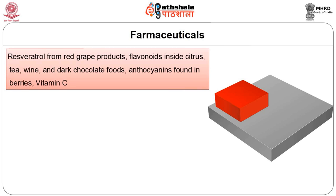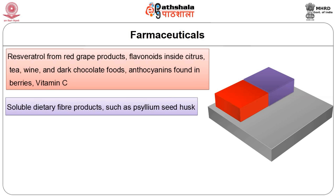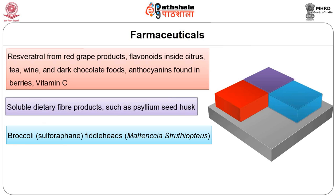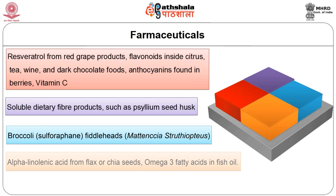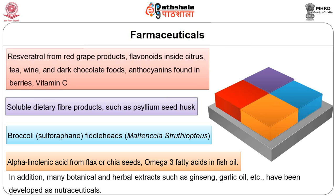You can see an incomplete list of foods with reported medicinal value. Antioxidants are present in large amounts in fruits and vegetables. One of the main antioxidants in red grape products is resveratrol. Another antioxidant present in citrus, tea and wine is flavonoids, which come under the category of polyphenols. Dark chocolate contains anthocyanins — a coloured antioxidant mainly found in berries — and vitamin C. Soluble dietary fiber products such as psyllium seed husk may help in reducing hypercholesterolemia. Broccoli and fiddleheads may help in preventing cancer. Alpha-linoleic acid from flax or chia seeds, and omega-3 fatty acids present in fish oil, may result in lowered risk of cardiovascular disease. Many botanical and herbal extracts such as ginseng and garlic oil have also been developed as nutraceuticals.